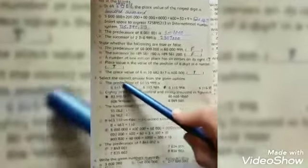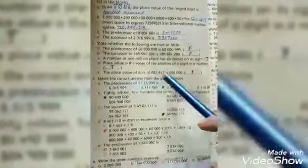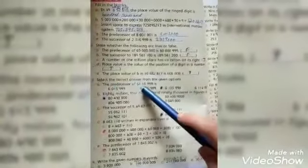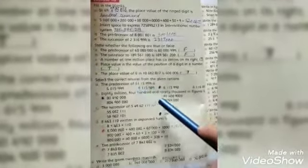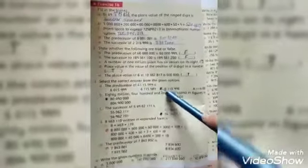Question number 3 is select the correct answer from the given option. The predecessor of 61155999 is... the right option is this one, the third one.